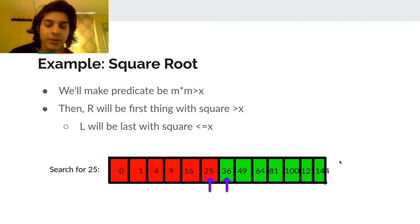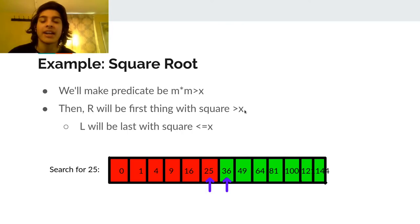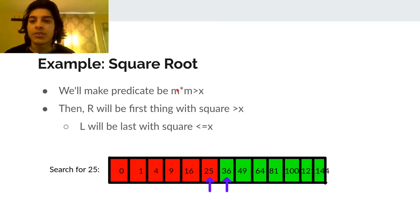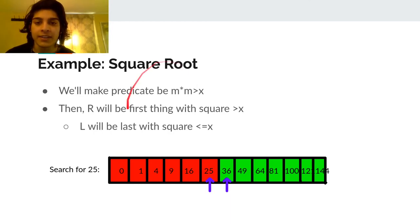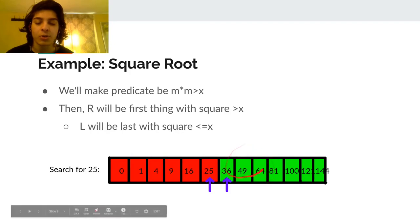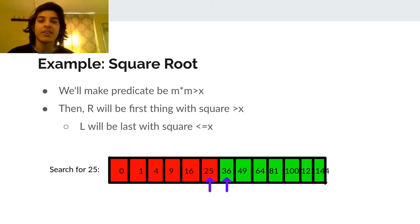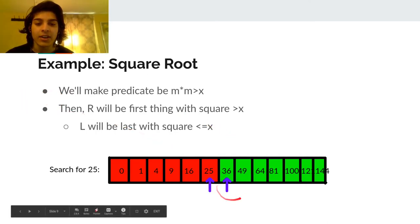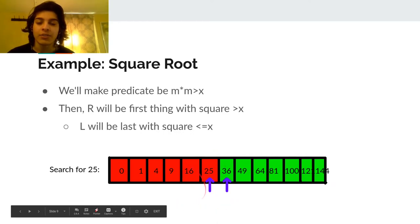Next problem: finding the integer square root. Given integer x, we want to find if it's a perfect square and if so, what its square root is. We make the predicate f(m) = (m * m > x). Numbers 0 through 5 have squares <= 25, so they're false (red), while 6, 7, 8... have squares greater than 25, so they're true (green). After binary search, R is the first number with square greater than x, and L is the last with square <= x.